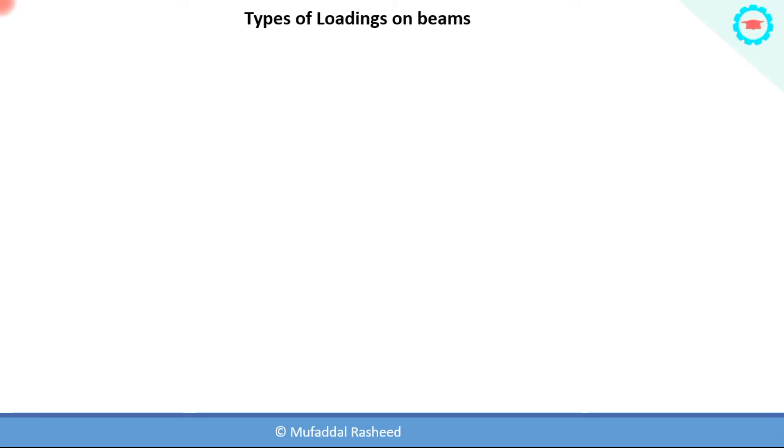Now we will have a brief look at the most common types of loadings which are generally considered on beams. The most common type is the point load, which we have seen till now. That is, we are considering only a single point on the beam which is experiencing a force, and that is called the point load.